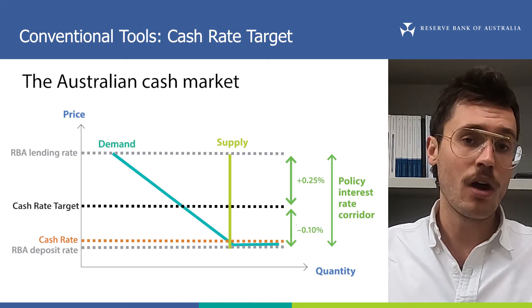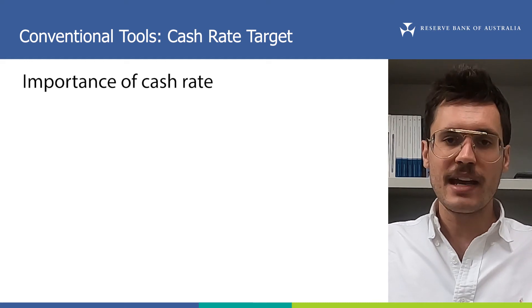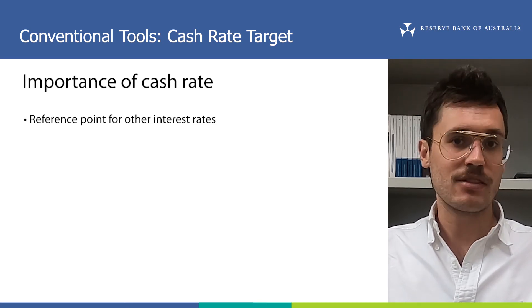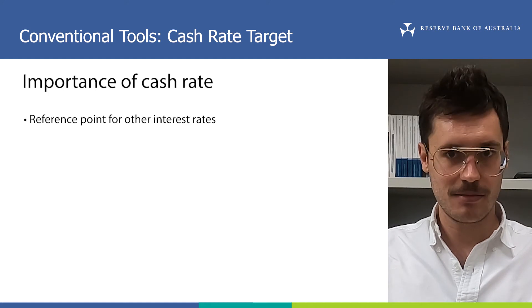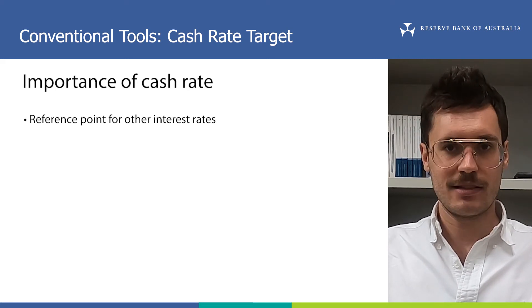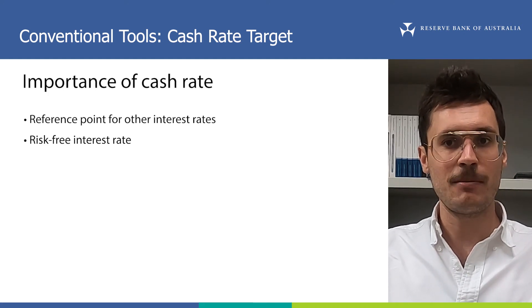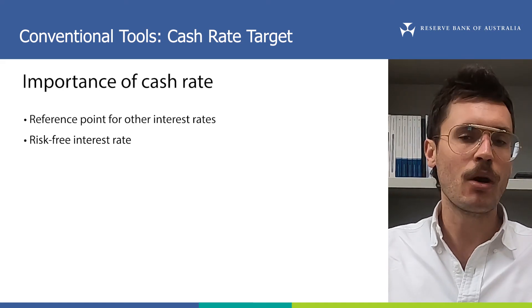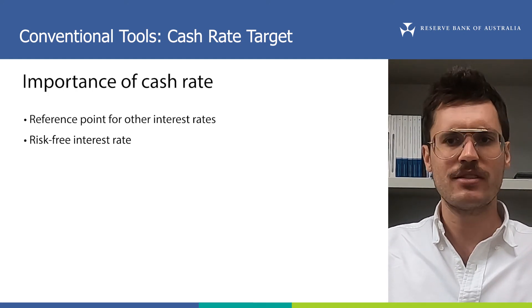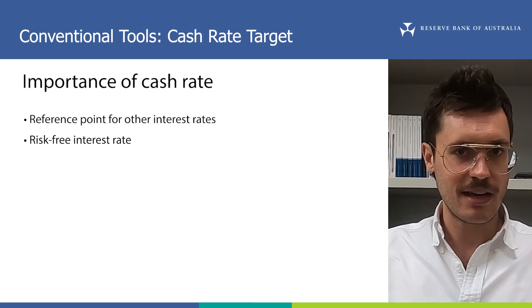So now we know how the cash rate target works as a monetary policy tool, but why does the cash rate matter for us? It's because the cash rate is a reference point for other interest rates in the economy. For example, banks use the cash rate as a reference point for the interest rates at which they lend money to customers. But why is the cash rate used as the reference point? Because in the world of financial markets, the cash rate is as close as you can get to a risk-free interest rate. If an interest rate is risk-free, it means there's no chance, or almost no chance, that a borrower will fail to repay money that they have borrowed to a lender. So what's the benefit of using a risk-free reference point for these interest rates? Well, it allows us to use a building-block approach to think about other interest rates in the economy.